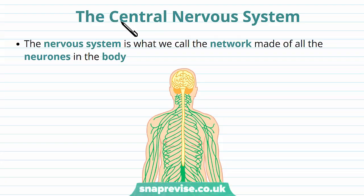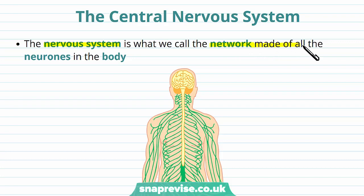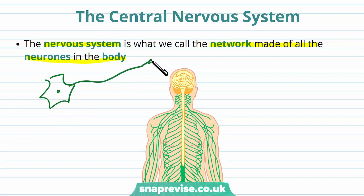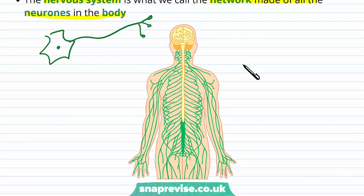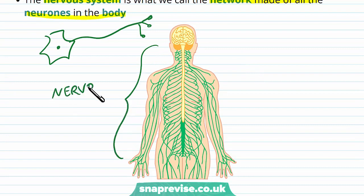First of all let's talk about the central nervous system as opposed to the peripheral. The nervous system is a term that we use to describe the entire network made up of all of the neurons in the body. The neuron is the individual cell that carries electrical impulses, and the collection of these is found in nerves, and all of the nerves in the body collectively is called the nervous system.